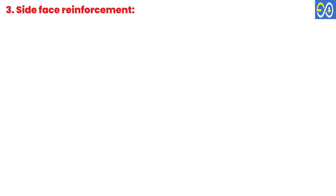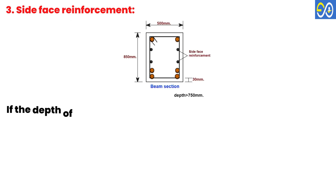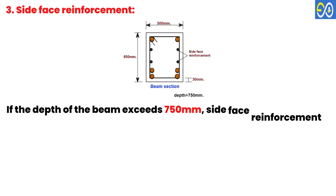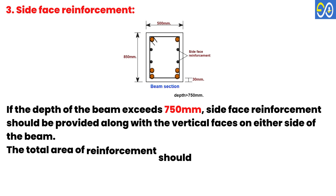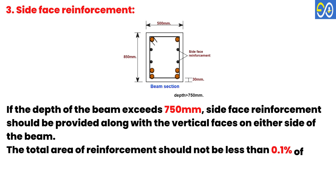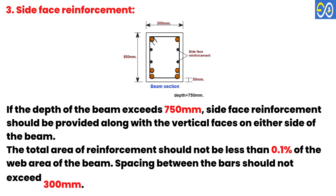Side Face Reinforcement: If the depth of the beam exceeds 750 millimeters, side face reinforcement should be provided along the vertical faces on either side of the beam. The total area of reinforcement should not be less than 0.1% of the web area of the beam, and spacing between the bars should not exceed 300 millimeters.